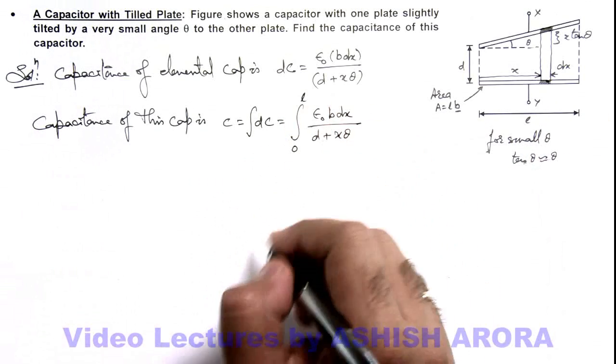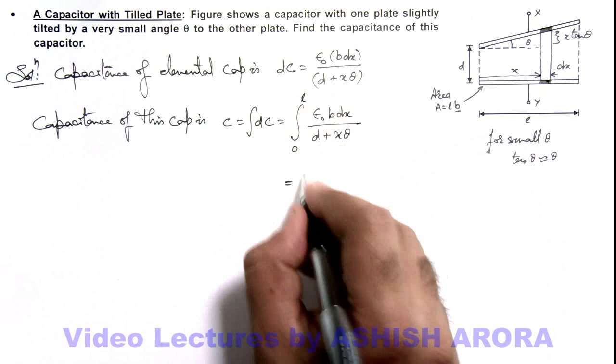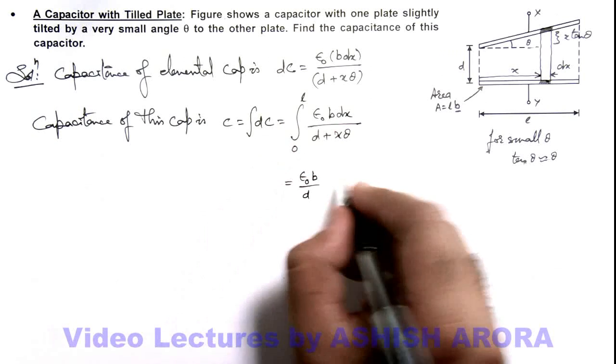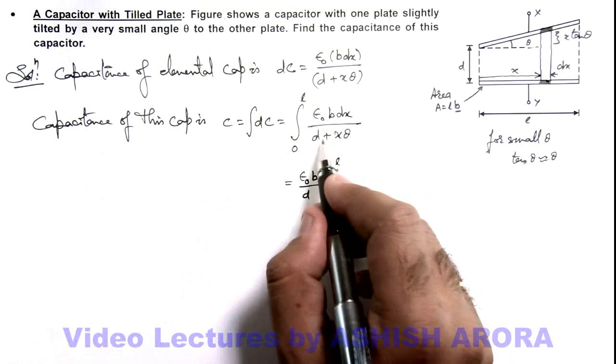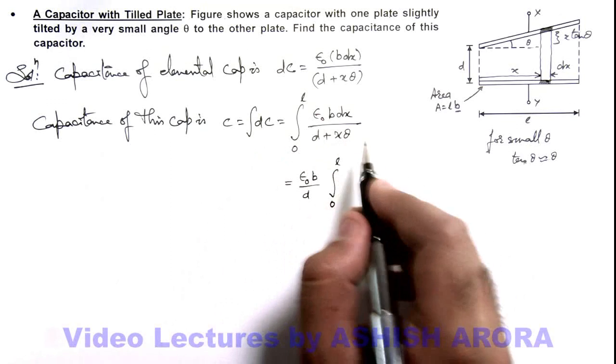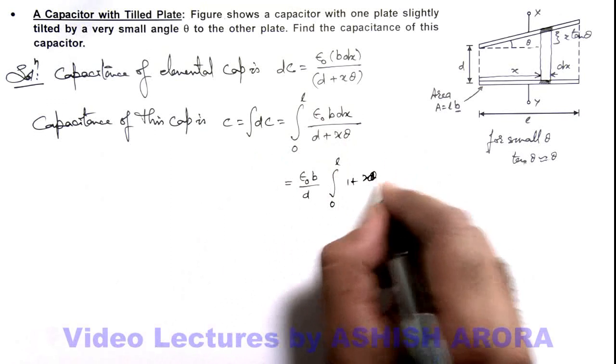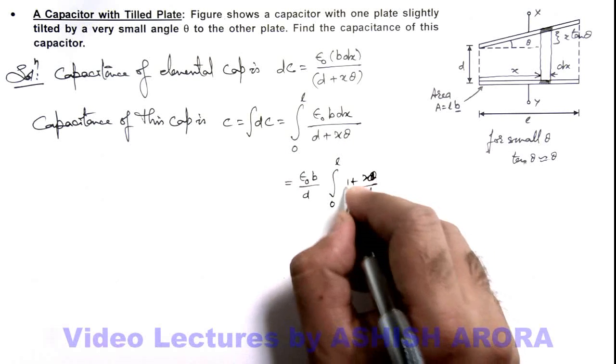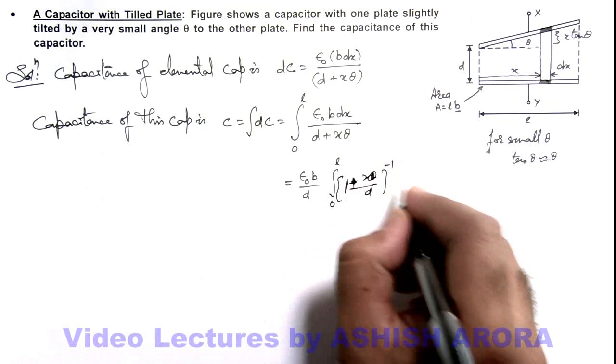So here, as we are given that theta is very small, we can take epsilon not b by d common out to the sign of integration, this zero to l. And d plus x theta will be 1 plus x theta by d, so it will be 1 plus x theta by d to power minus 1, and dx.